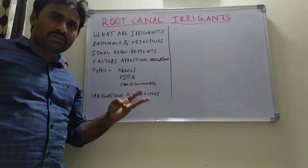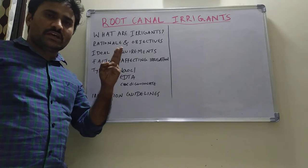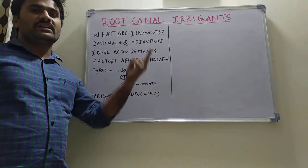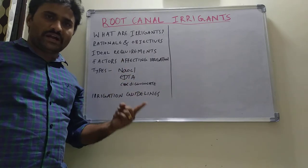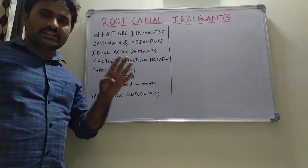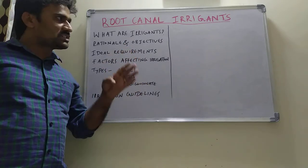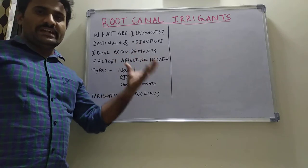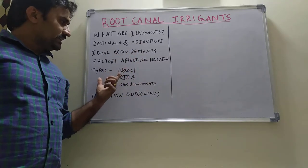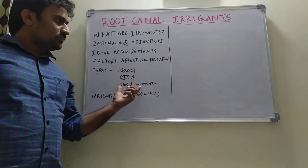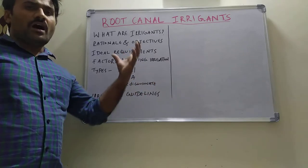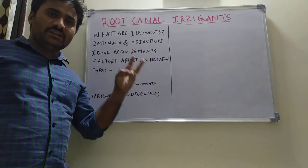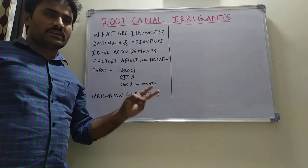The ideal requirements of irrigants are: they must have antimicrobial property; they must have tissue dissolving capacity to eliminate any remaining pulpal remnants; they must be biocompatible and non-toxic, not irritating normal periradicular tissues; and they must provide lubrication with low surface tension. The currently available irrigants — sodium hypochlorite, EDTA, and chlorhexidine digluconate — do not meet all these ideal requirements.